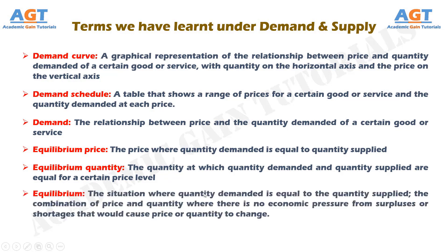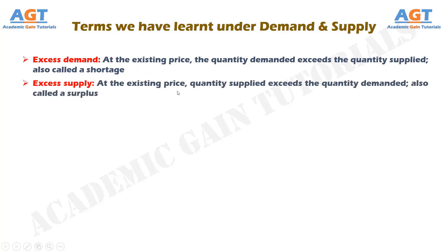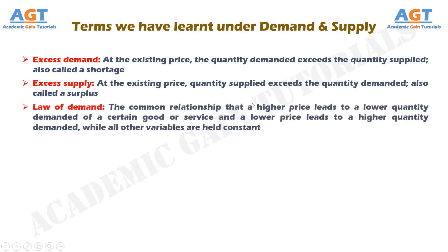Equilibrium is the situation where quantity demanded is equal to the quantity supplied — the combination of price and quantity where there is no economic pressure from surpluses or shortages that would cause price or quantity to change. Excess demand is a situation in which, at the existing price, the quantity demanded exceeds the quantity supplied; it is also called a shortage. Excess supply is a situation in which, at the existing price, quantity supplied exceeds the quantity demanded; also called a surplus. The law of demand states the common relationship that a higher price leads to a lower quantity demanded and a lower price leads to a higher quantity demanded, while all other variables are held constant.